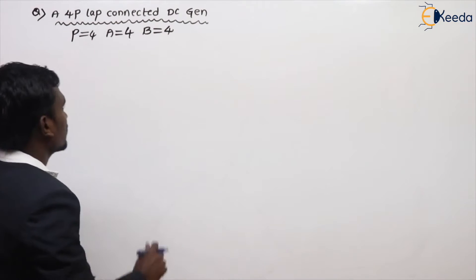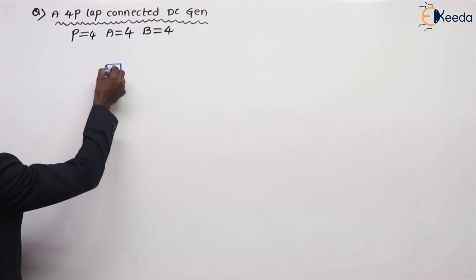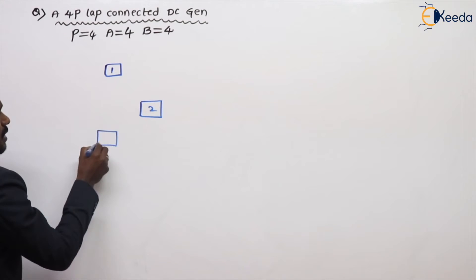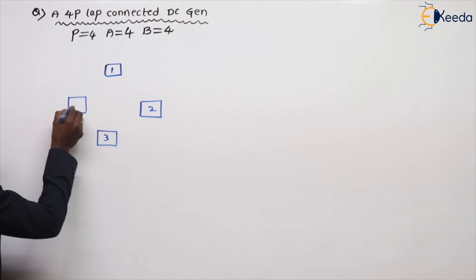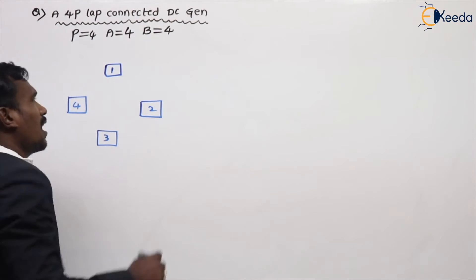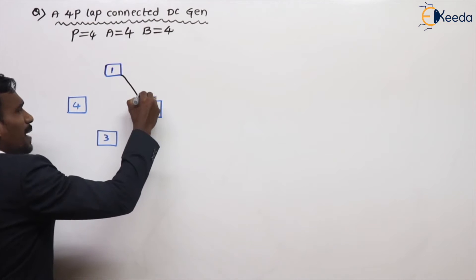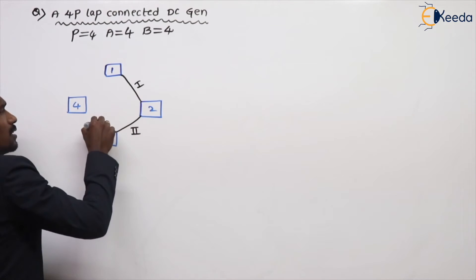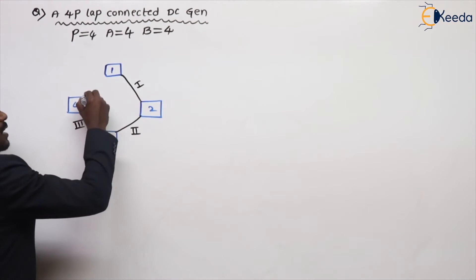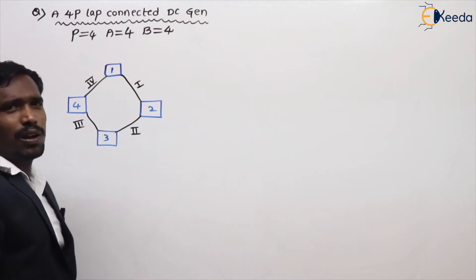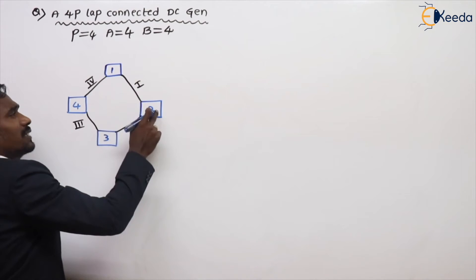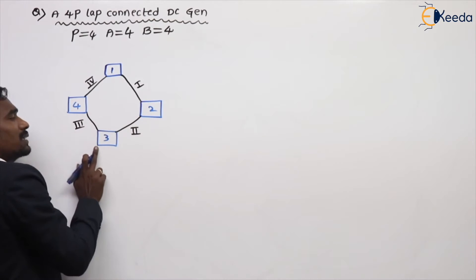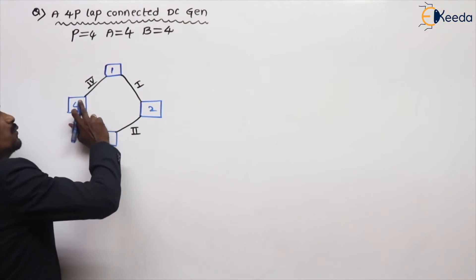So let's take here. This is the first brush, this is the second brush, this is the third brush — because the machine is in circular manner. This is the first parallel path, this is the second parallel path, this is the third parallel path, and this is the fourth parallel path. The first parallel path covers the first and second pole and brush, the second parallel path covers the second and third, the third covers third and fourth, and the fourth parallel path covers fourth and first.